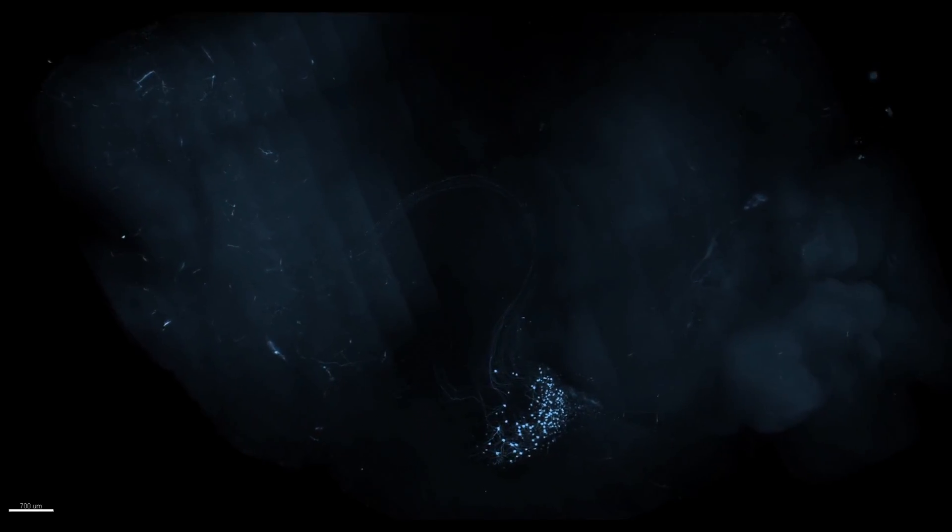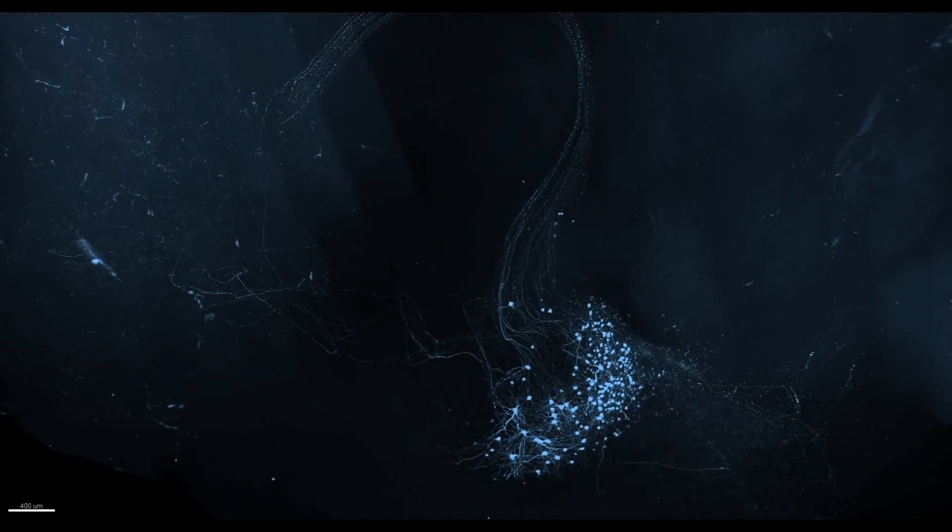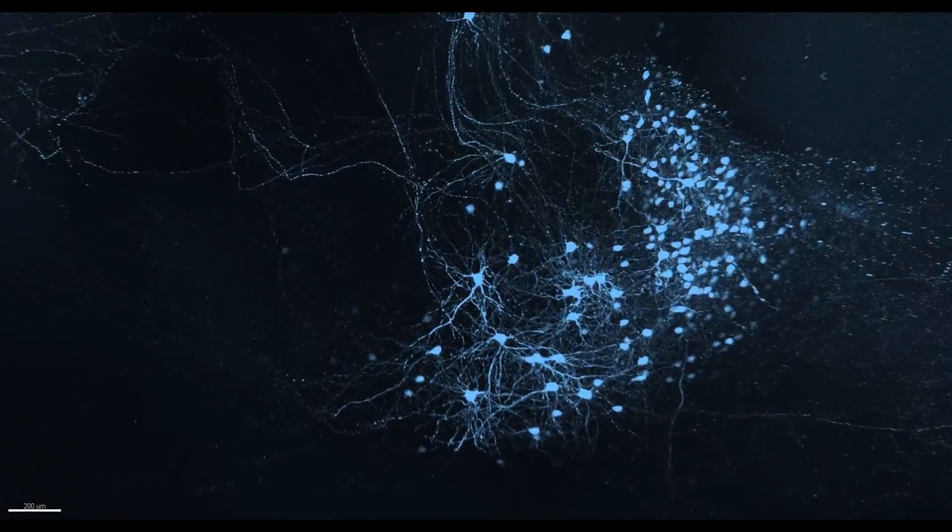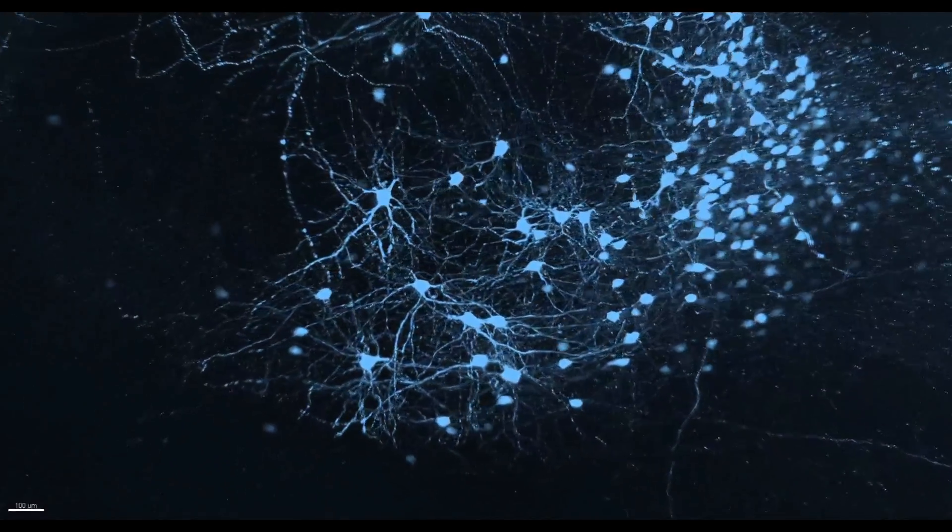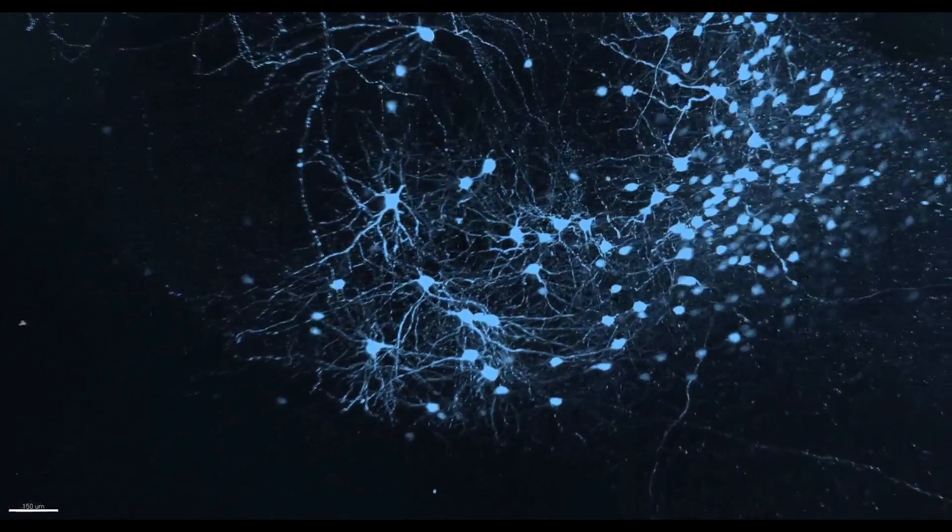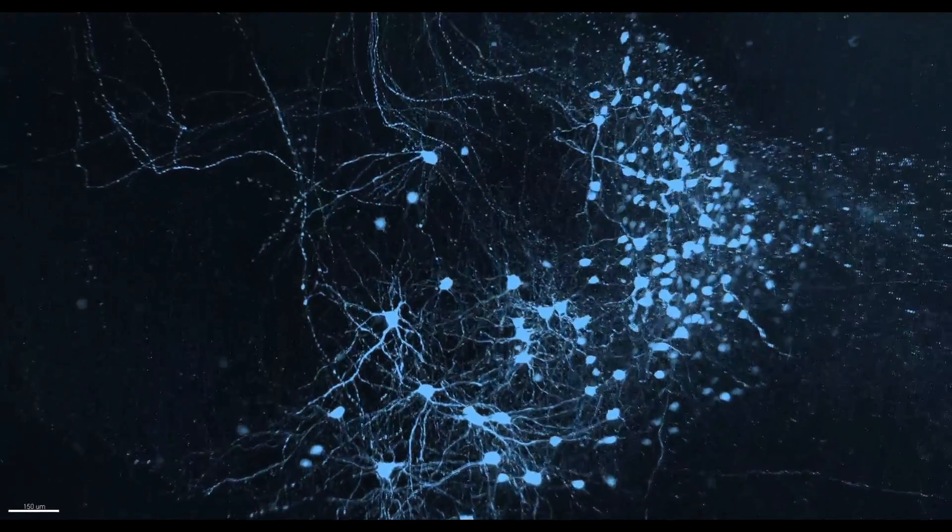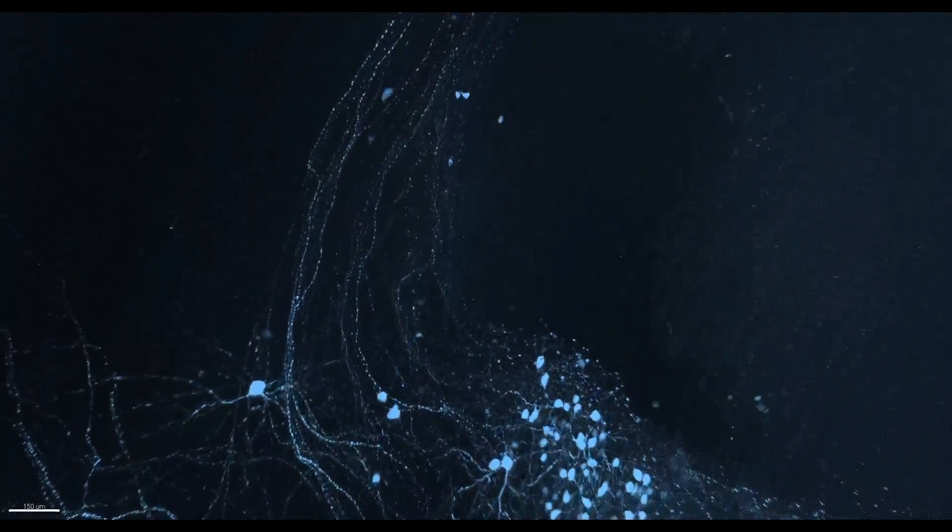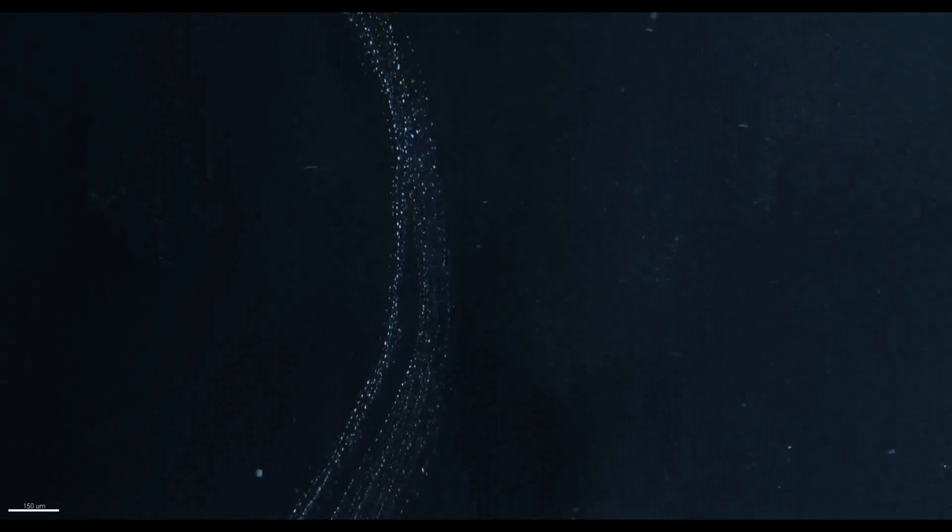By analyzing the recorded neurons, researchers found not all of the neurons reacted the same and saw patterns in different populations defined by their projection pathway. One group of neurons was overall more excited by the reward, while the other was overall more excited about the unpleasant taste.